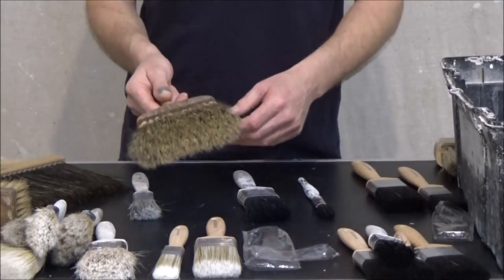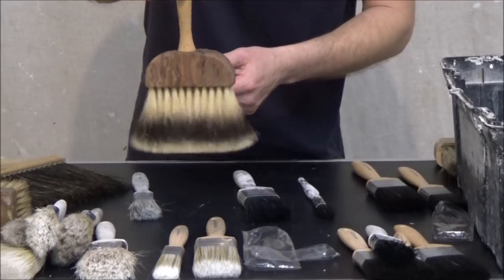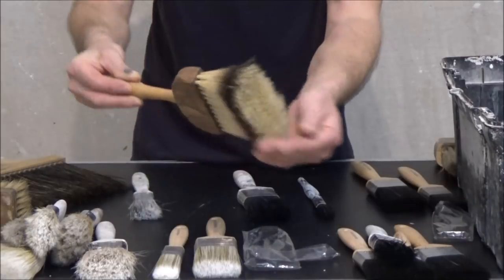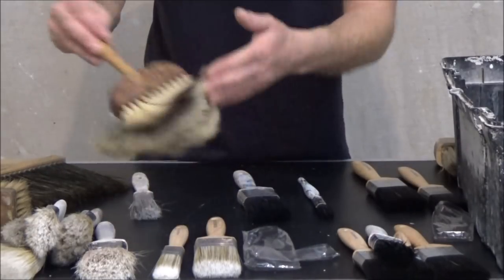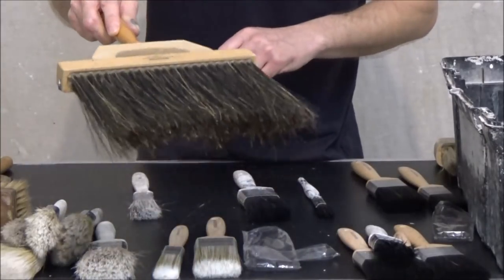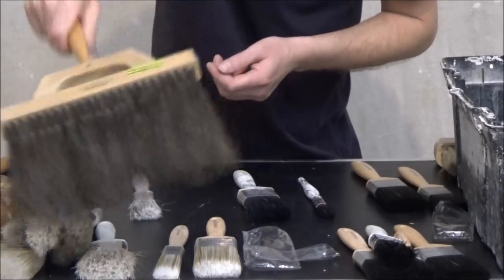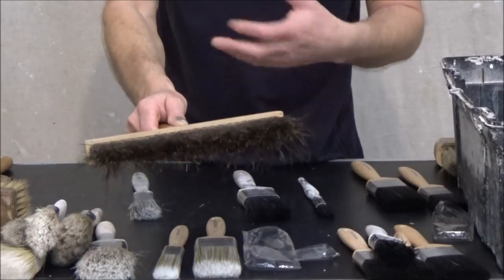These are just some other brushes I've got. That's a softener. You use that for marbling, wood graining. That's actually badger hair. So, this is another one. And this is horse hair. That's called a flogger. And again, I use that in marbling and wood graining.